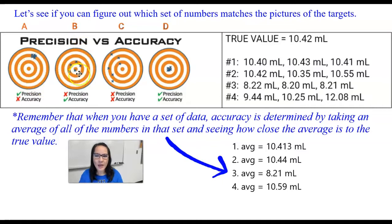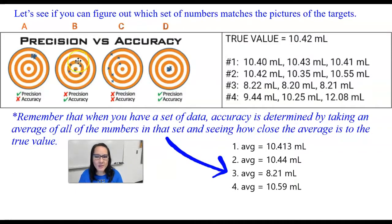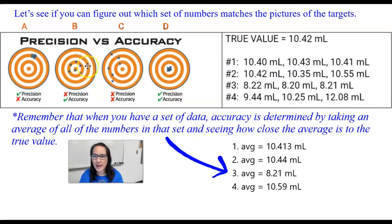For target B, the average of these hits is going to end up being close to the true value, so we're going to call it accurate. But because they're not exactly hitting in nearly the same spot over and over again, it's not precise.